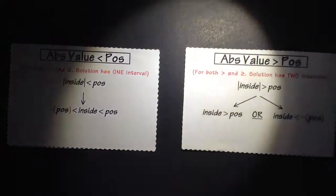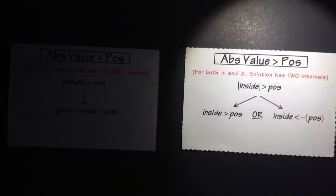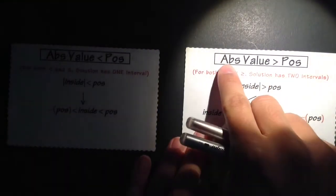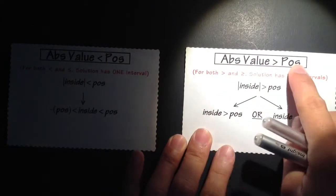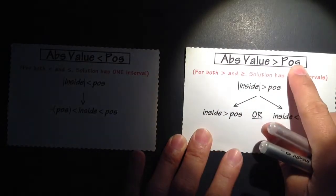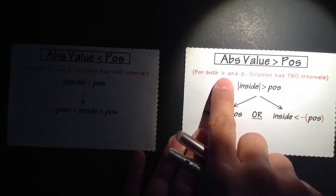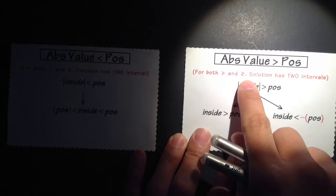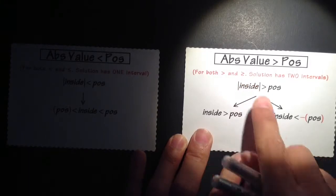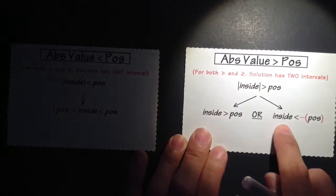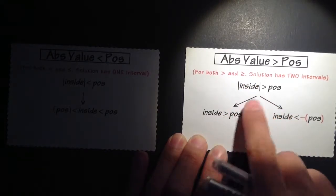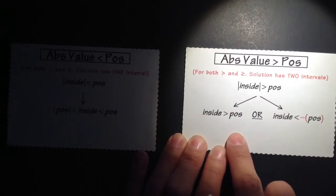Another situation is when we have an absolute value that is greater than a positive number. Again, this applies to greater than and also to greater than or equal to. But in this situation, you are going to split into two different intervals — two different inequalities.